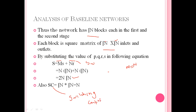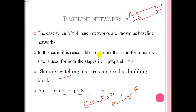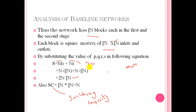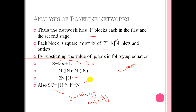Switching capacity is the number of links between the inlets and outlets — it represents the capacity of the network to handle traffic. In this case, sr equals √n times √n, so switching capacity S equals n. That was the condition for the baseline network.